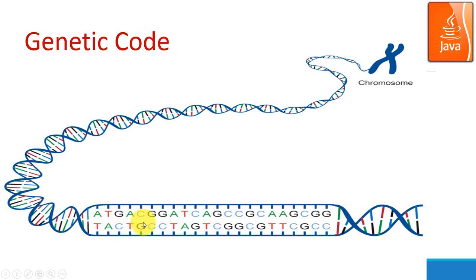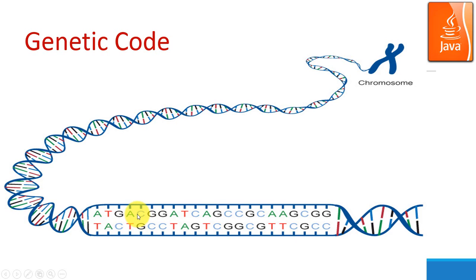Basically, there are just four possible codes, and each one needs to be paired with the right coding. Each of the A, T, C, G codes is actually represented by a certain molecule.